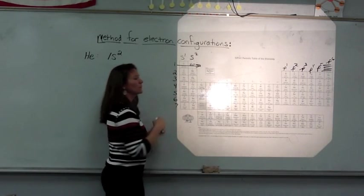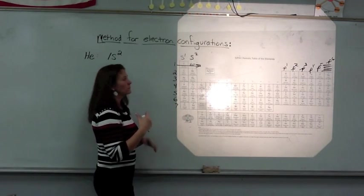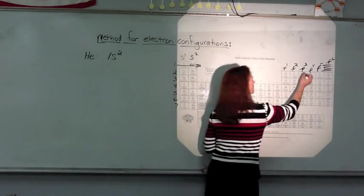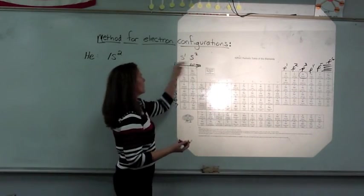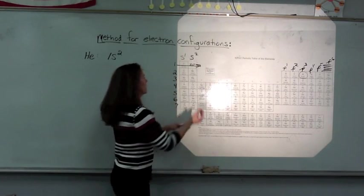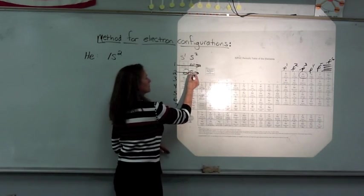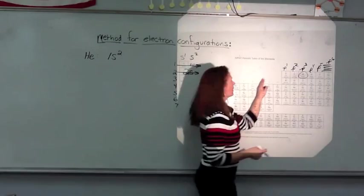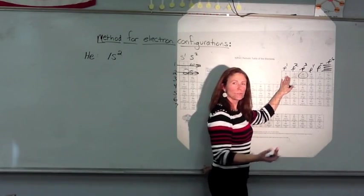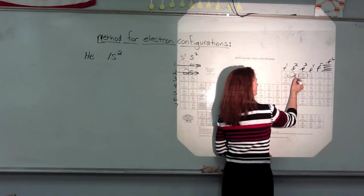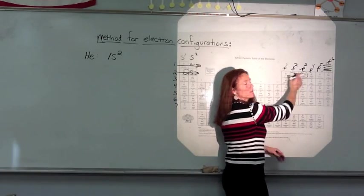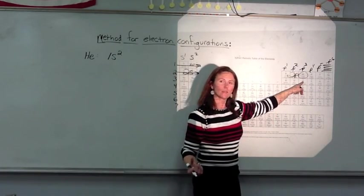If we were to look at the configuration of nitrogen, well, nitrogen would have the 1s completely filled with two. And then it's going to start filling the 2s with two. And then this area over here would be our 2p row. And nitrogen is the third one over, so it would have three electrons in the p.